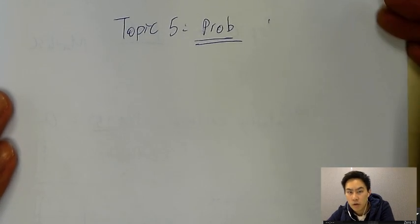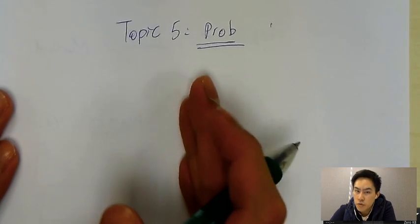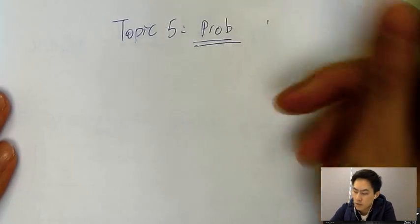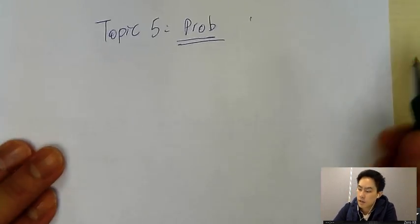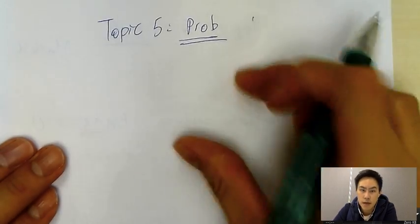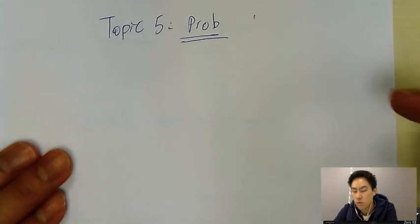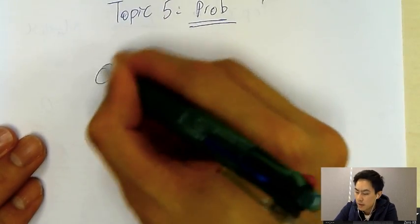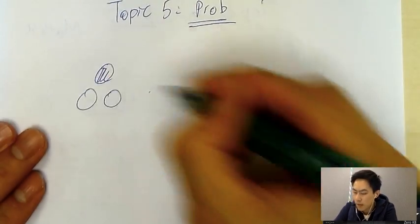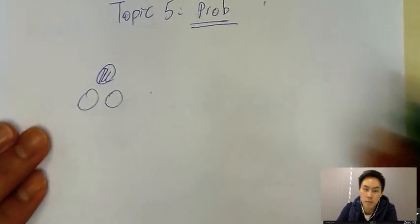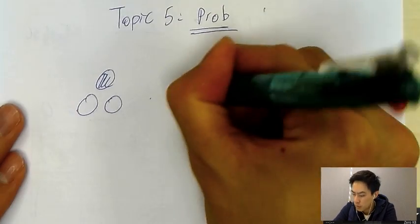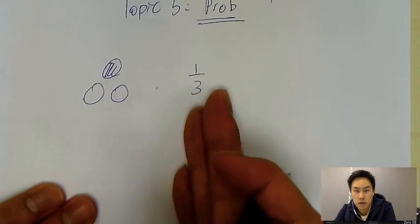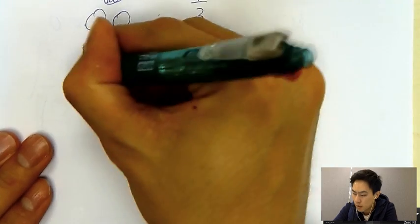Welcome back everyone, I'm Edward from Hong Kong Excel. The topic I'm going to cover today is probability. If I ask you to pick out one black ball from three balls, the probability would be one over three — very easy, and most of you should understand all the basic concepts here.